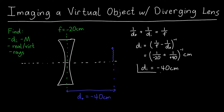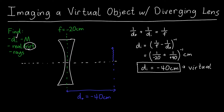We've found the image location, so we can check that off. Because di is negative, the image is virtual, meaning it's going to be on the left-hand side of the lens. The rays won't actually converge to meet each other — it will appear as if they're coming from a certain point.